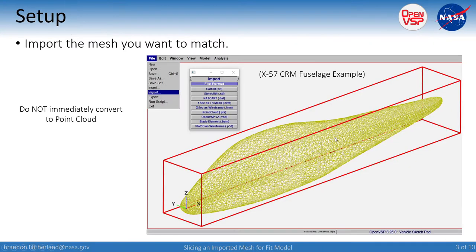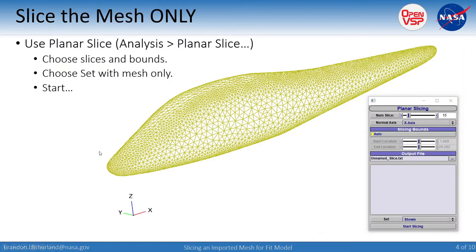For this example we're going to walk through the X57 common model fuselage that I performed a CFD mesh on to intentionally make it unstructured, then brought it back into VSP. The idea is that you import the mesh you want into OpenVSP — here you can see this unstructured mesh — and rather than immediately converting it into a point cloud, we want to do some stuff first. The trick is to go to Analysis and Planar Slice, where you can choose your slices and bounds.